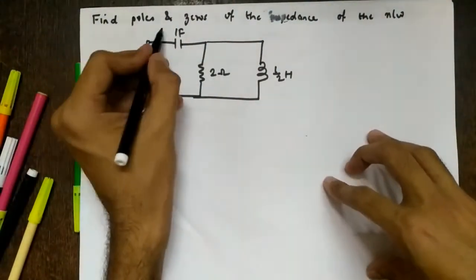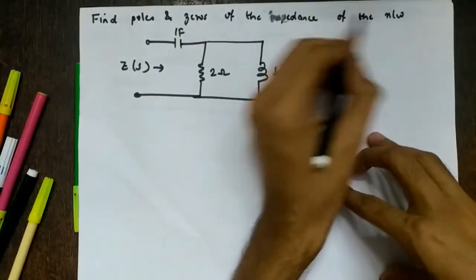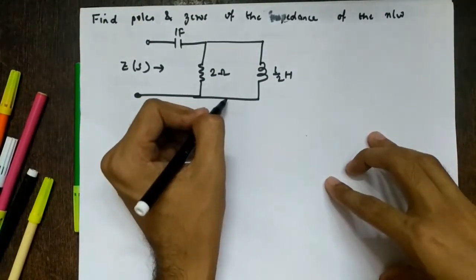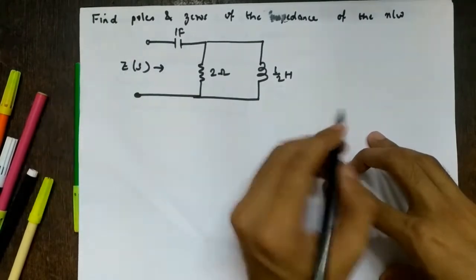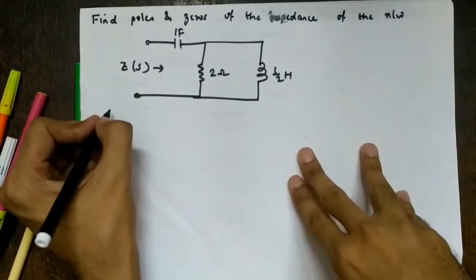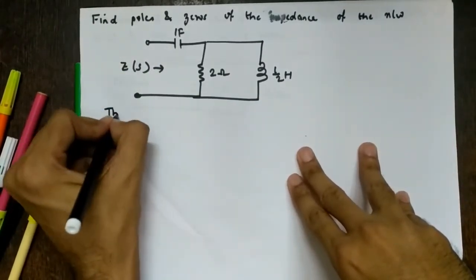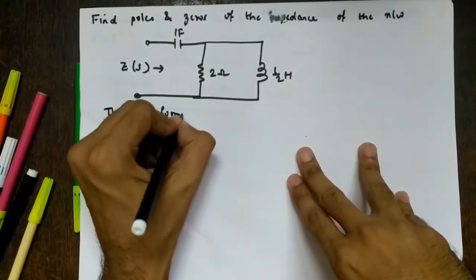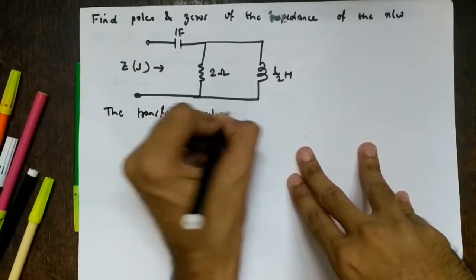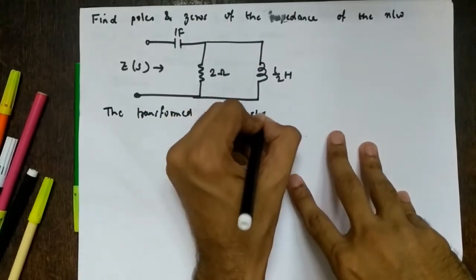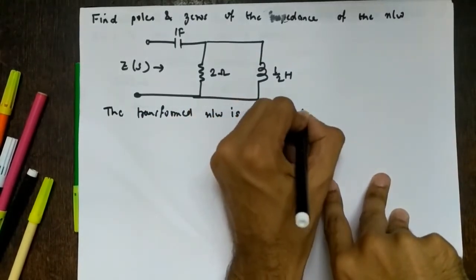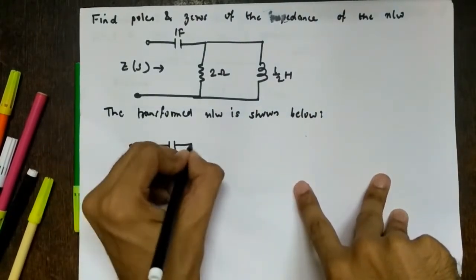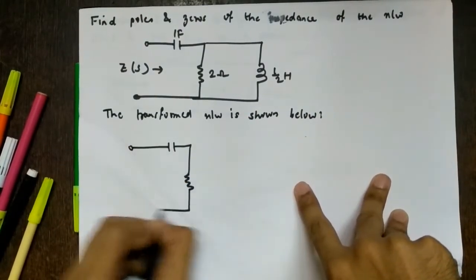The next problem asks us to find the poles and zeros of the impedance of a given network. The difference here is that the function Z(s) is not given directly — we must derive it from the network. The first step is to draw the transformed (Laplace-domain) network. One farad becomes 1/s, a 2 Ω resistor stays as 2.